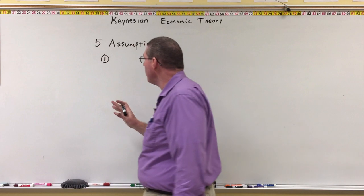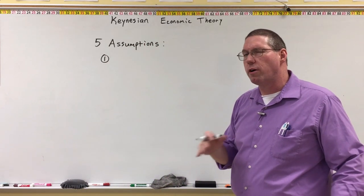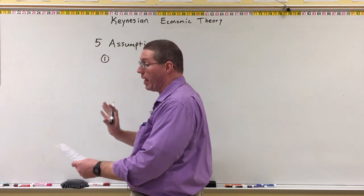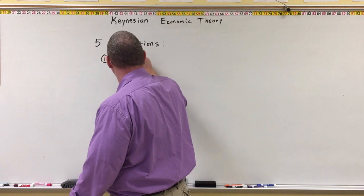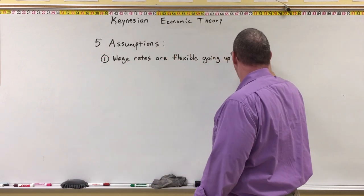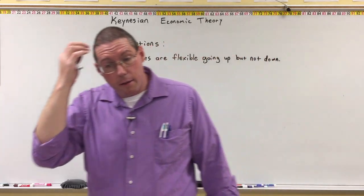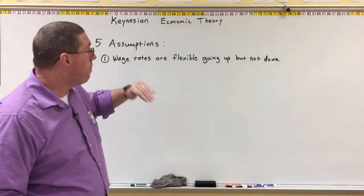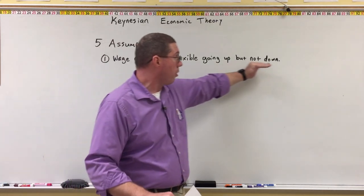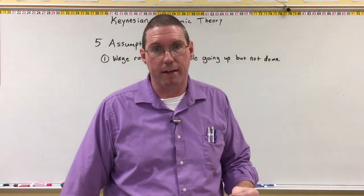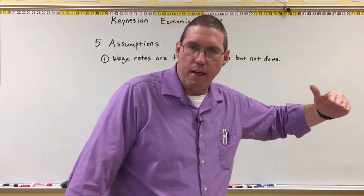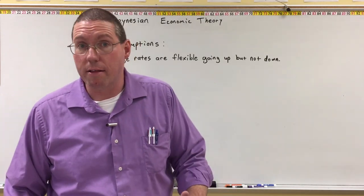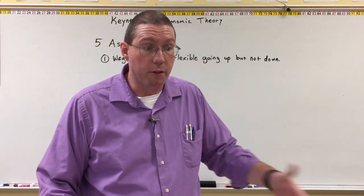The first assumption, which we mentioned under classical economic theory and wondered if it was a problem — Keynes said yes, it's definitely a problem. The first assumption is that wage rates are flexible going up, but not going down. Workers are okay with the wage rate going up; they're okay with accepting more money. But when it comes time for wage rates to go down, often they can't. It's called a ratcheting effect — they move smoothly in one direction, but in the other direction there's resistance. This is often because of labor unions or labor contracts that require businesses to pay a certain wage until the contract is over.